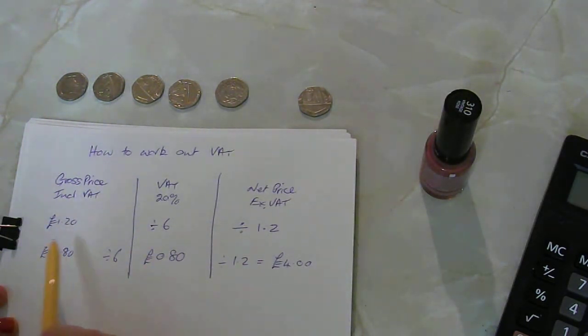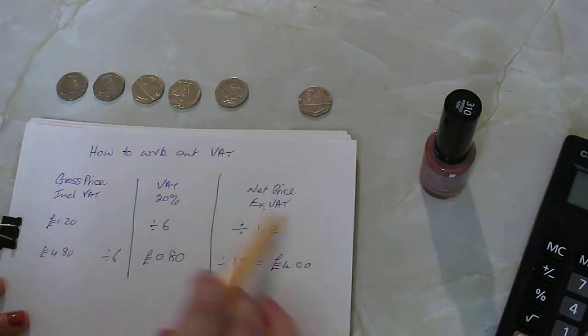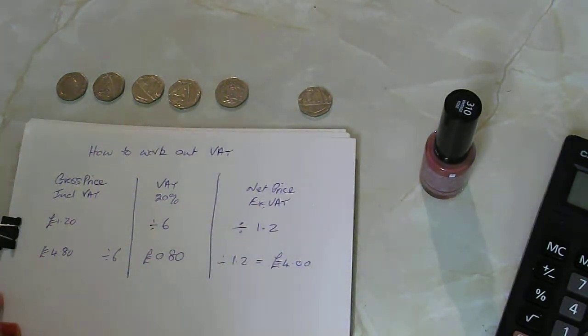So if you've got a price that has tax included and you need to find the VAT or the net price, then these are how you would do it. So I'd take a screenshot or whatever but use that to help you. Thank you.